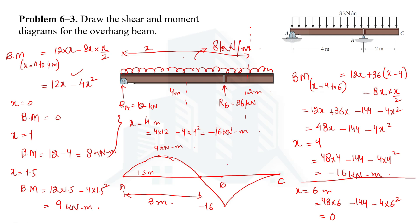This is how you draw the shear force and bending moment diagrams for an overhanging beam with a uniformly distributed load. We used equilibrium conditions to find reactions, then derived equations for each beam segment. Thank you for watching and I hope to see you in the next video.